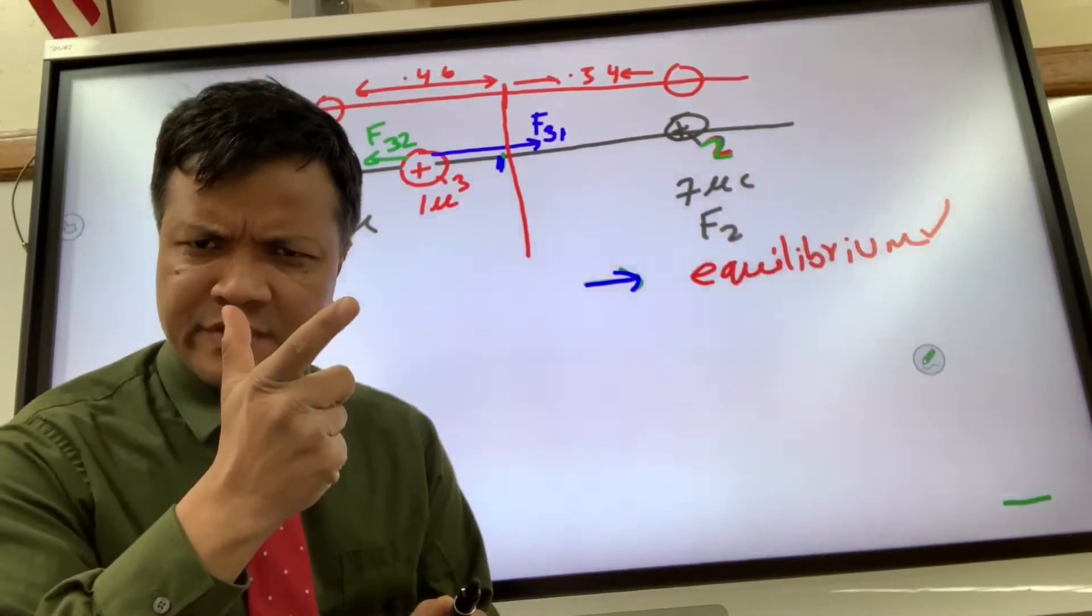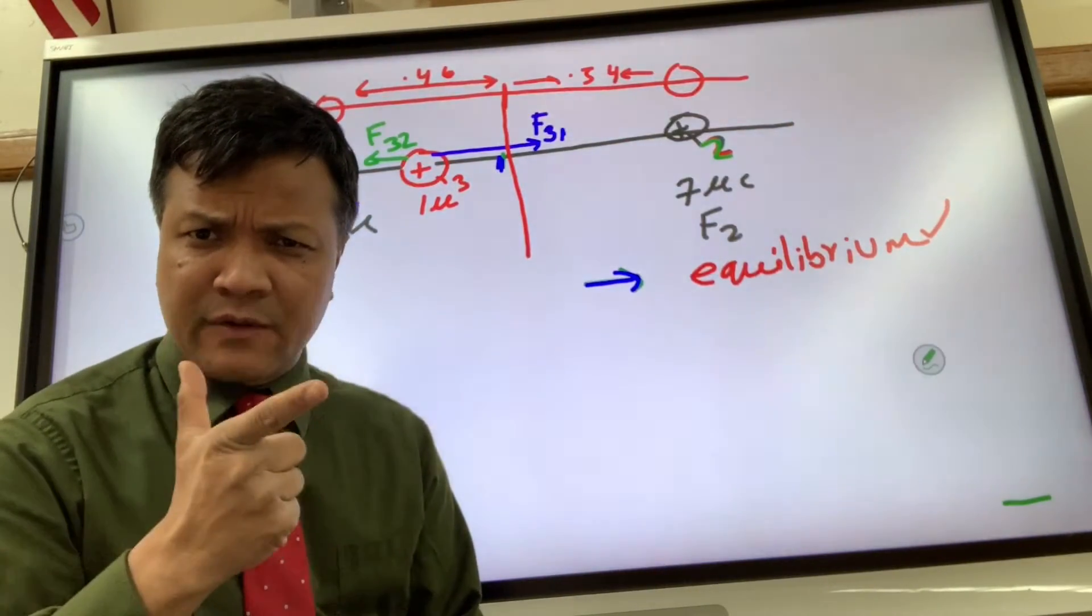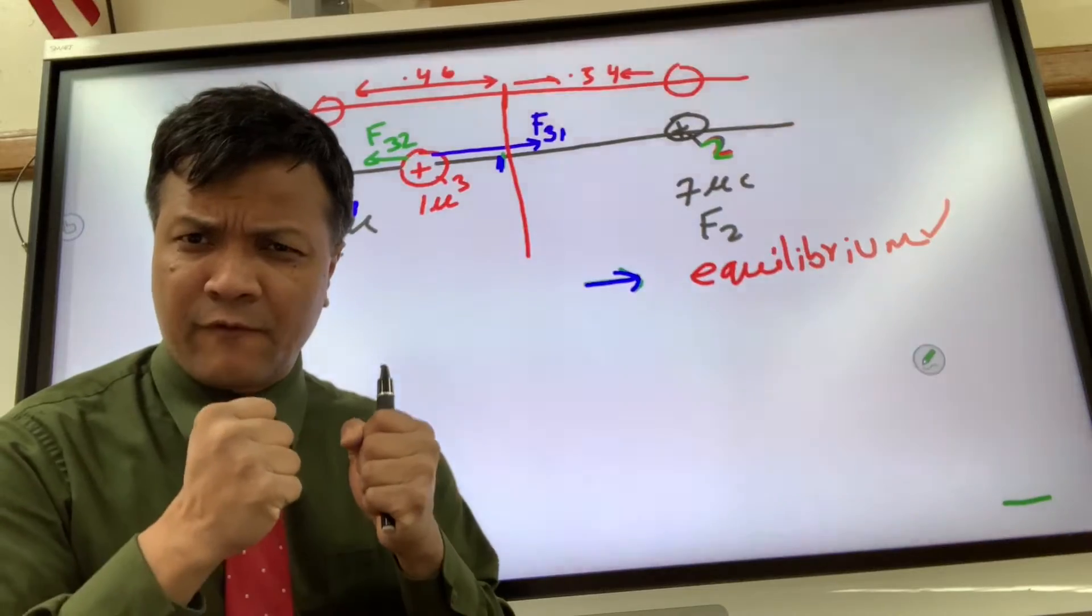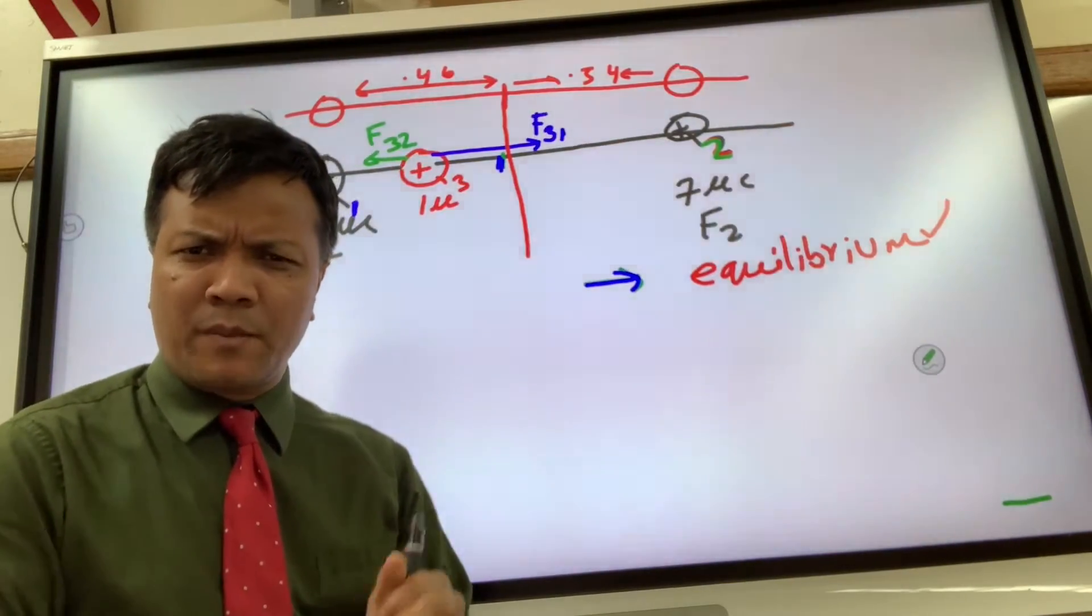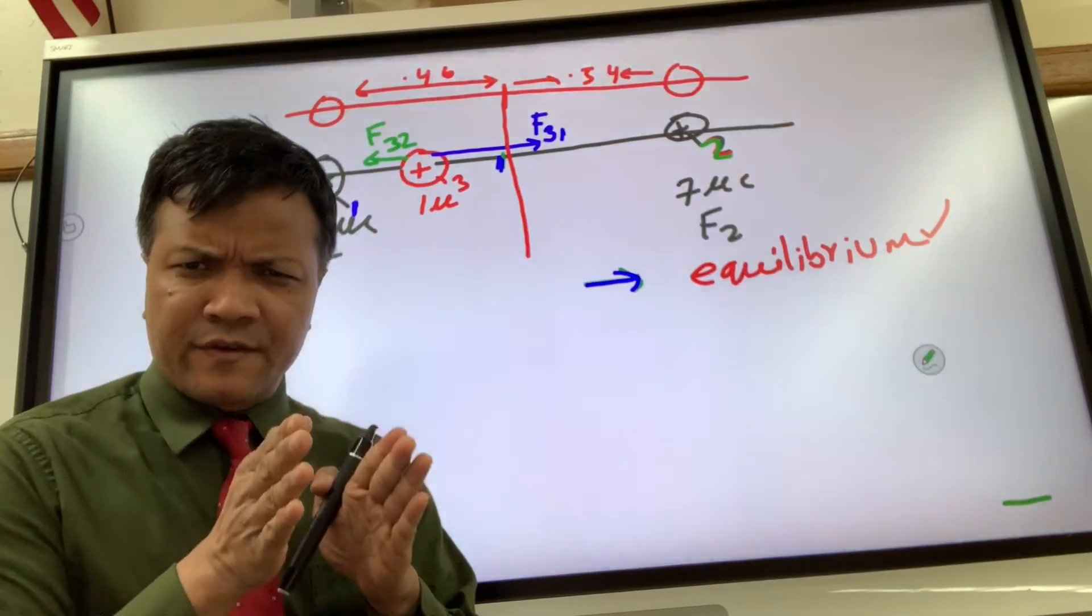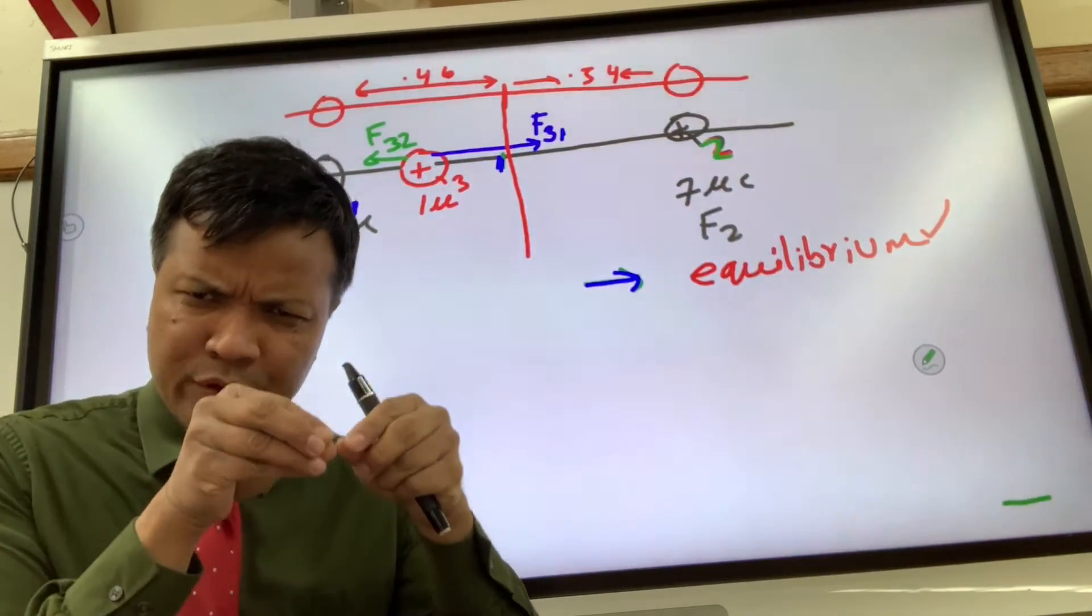This time we're gonna make one of the charges negative. So instead of positive 5 microCoulombs, we're gonna make it negative 5 microCoulombs, and we're gonna keep everything the same.